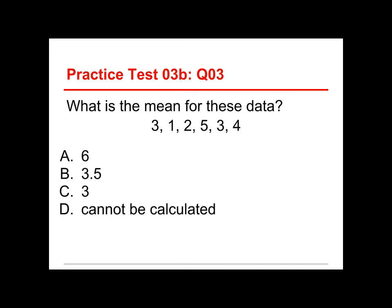All right, what is the mean for these data? We've got six numbers: one, two, three, three, four, five. And the choices are six, 3.5, or three, or cannot be calculated. And the answer to this is three. Now, let's take a look at how that works, because this one actually involves calculations.